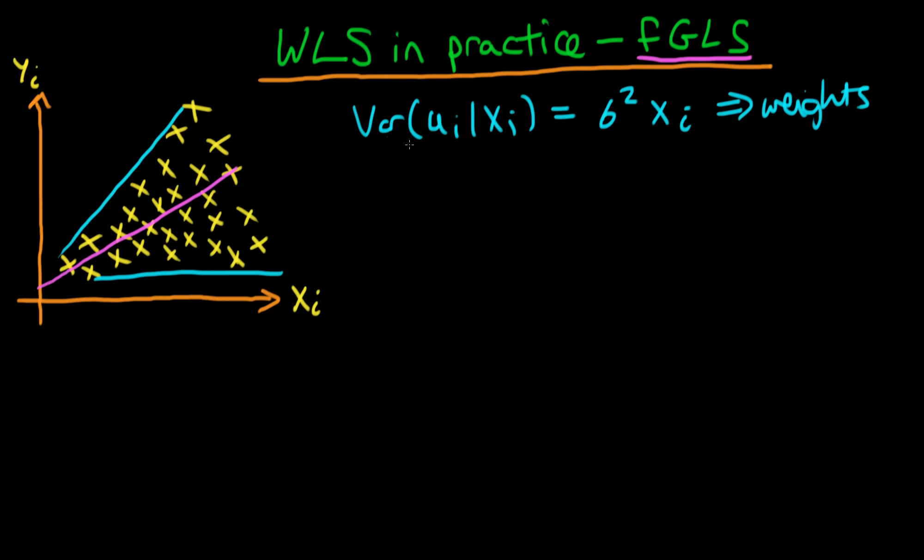In most cases we don't actually know this explicit form of the variance, so we actually have to go ahead and estimate the functional form of the variance. In order to do that we need to first specify a model for our variance.